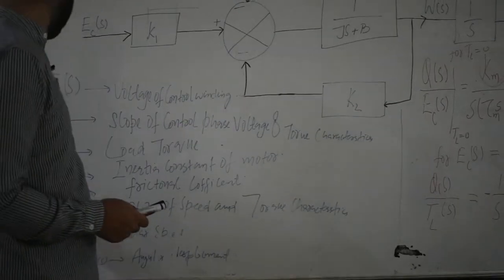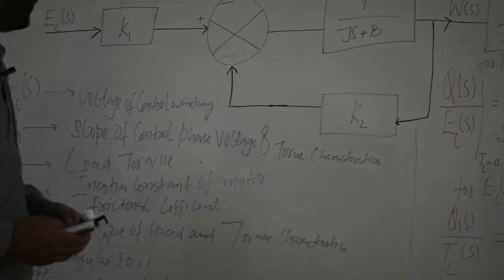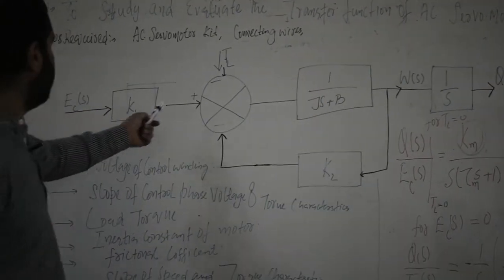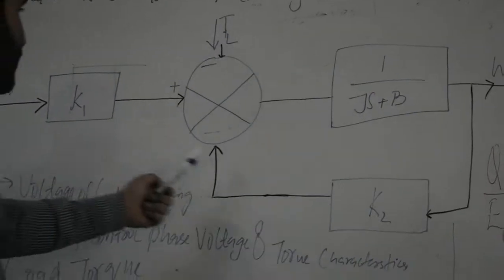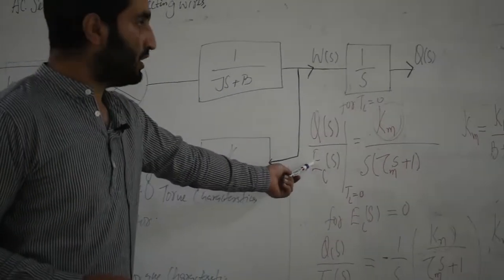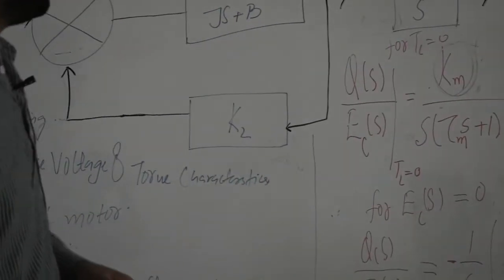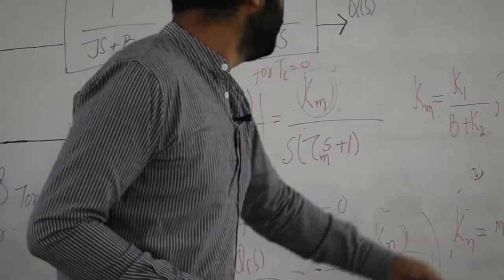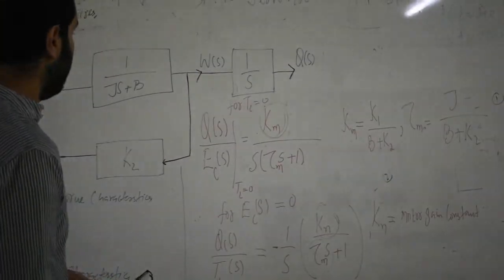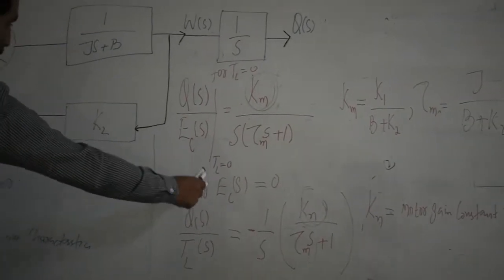In the block diagram, J is the inertia constant of the motor and B is the frictional coefficient. With TL equal to zero and EC(s) as input, the transfer function theta(s) divided by EC(s) is Km divided by s(tau_m · s + 1), where Km = K1 / (B + K2) and tau_m = J / (B + K2).